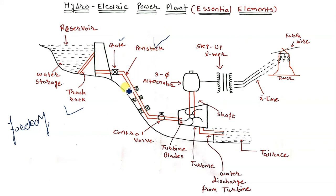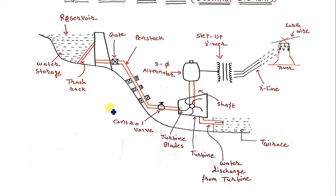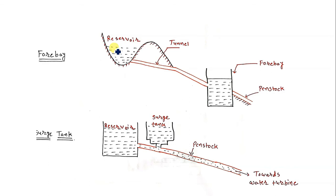The next element is the forebay. As you can see in the figure, the forebay is used as a regulating reservoir. If the forebay is not provided then a surge tank is required, but when a forebay is present we do not need to worry about the surge tank.